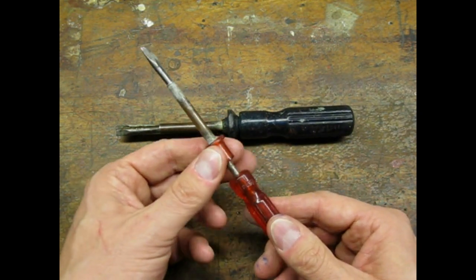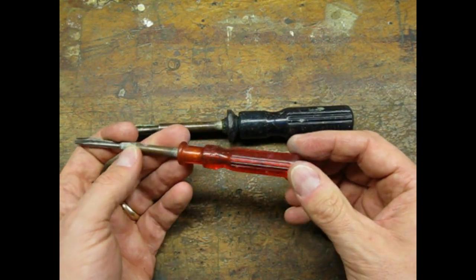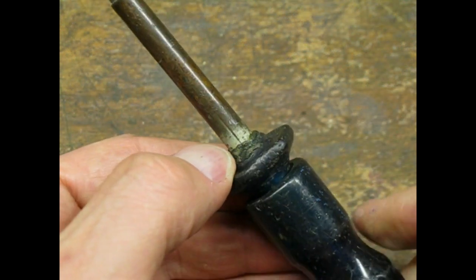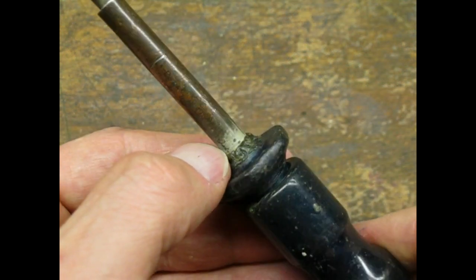The larger blue handled screwdriver was in the worst shape of the two. It looked like someone used heat to reattach the plastic handle.